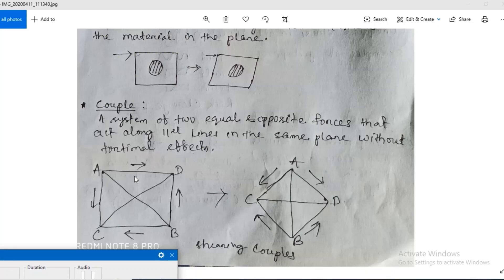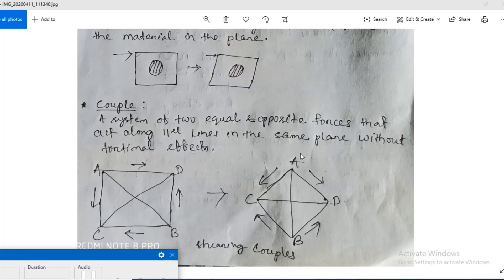AC and BD are equal and opposite forces. Same, AD and BC are two equal and opposite forces. This is the square body and this is the rhombus body. And this is the strain effect.